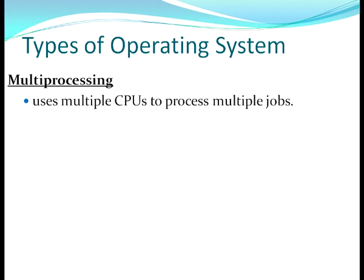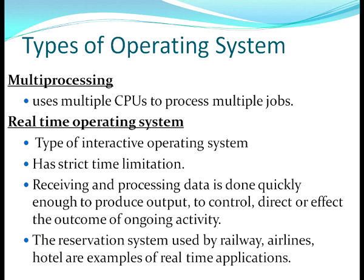Multiprocessing operating systems use multiple CPUs to process multiple jobs. Real-time operating systems have an interactive nature with strict time limitations — receiving and processing data is done quickly so that output is produced quickly to control or affect the outcome of an ongoing activity. A reservation system is an example: reserving or cancelling a ticket must be done within a particular time frame.